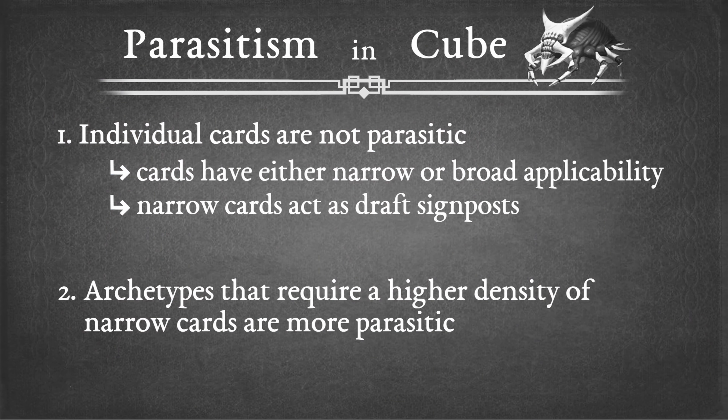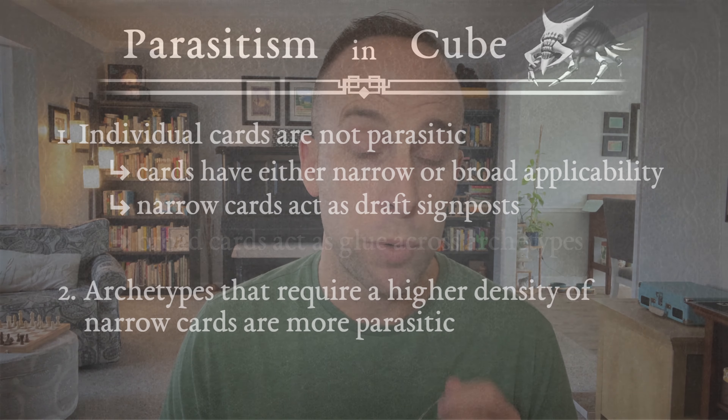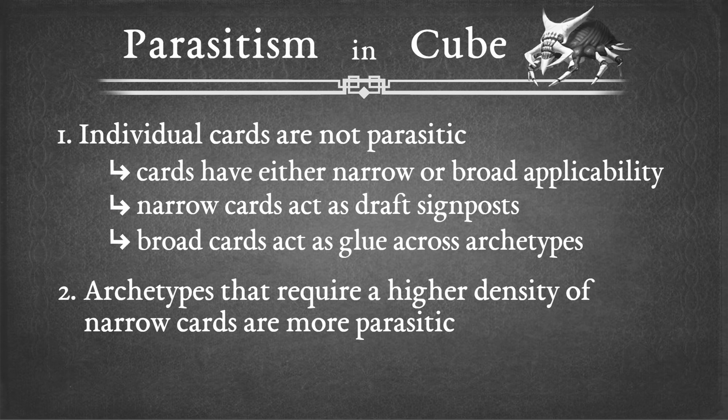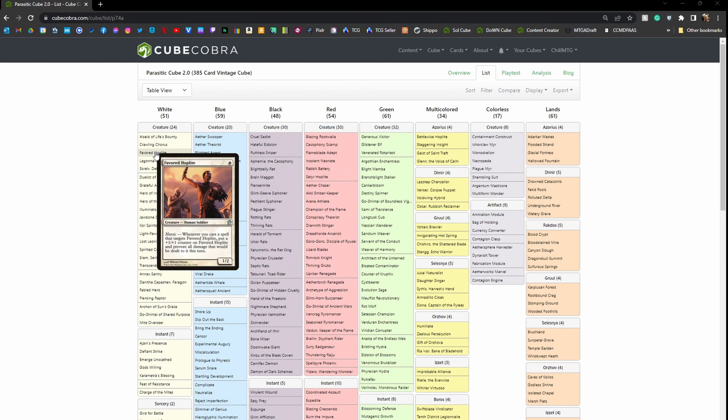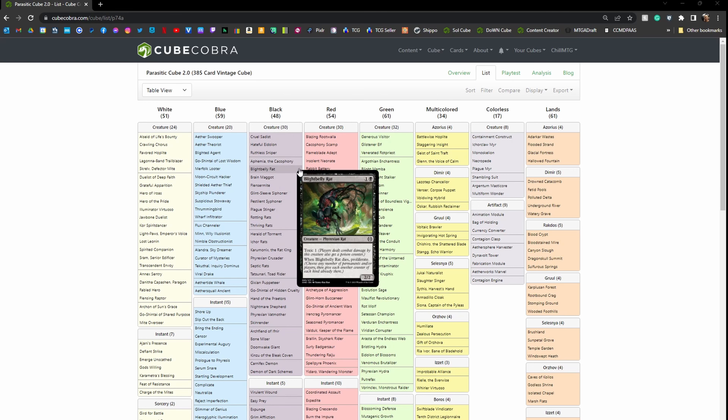In fact, narrow cards can act as signposts to drafters, letting them know that certain archetypes are supported in the environment. Conversely, while cards with broad application can fit in numerous archetypes, they do not pull drafters towards any specific archetype. Broad applicable cards do act as glue providing function across numerous archetypes within a cube. However, a cube with only broadly applicable cards would start to feel homogenous, with all decks looking and working similarly.